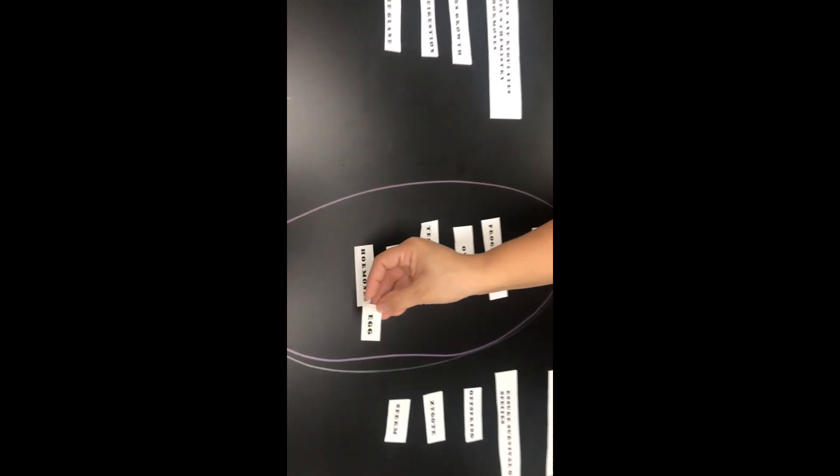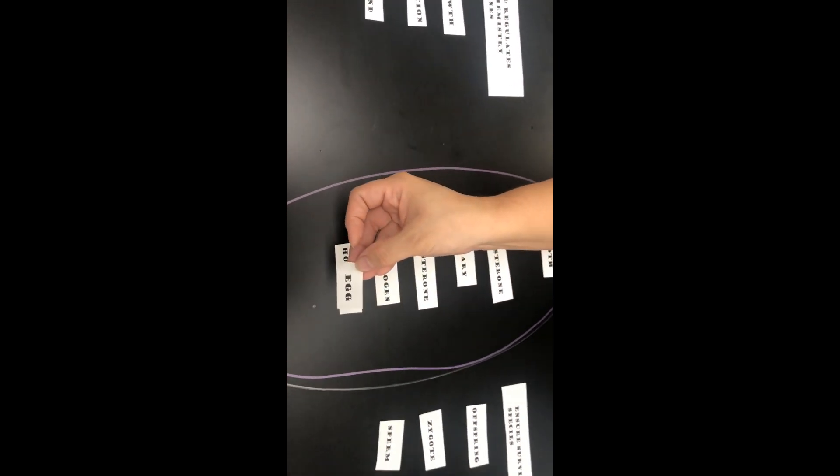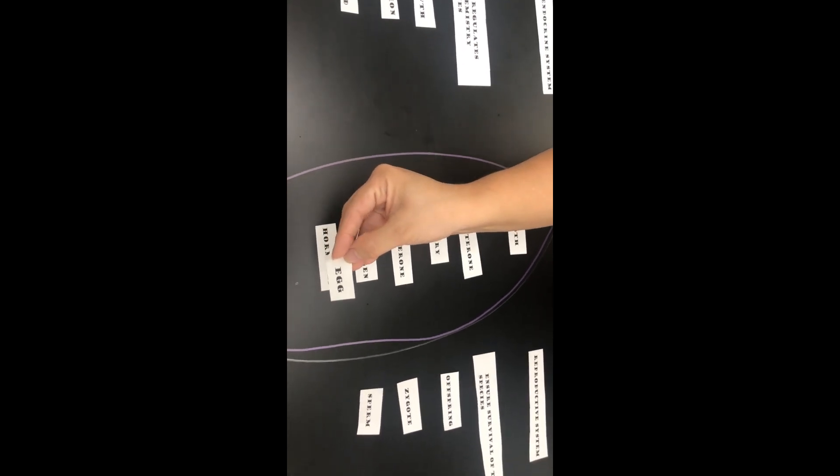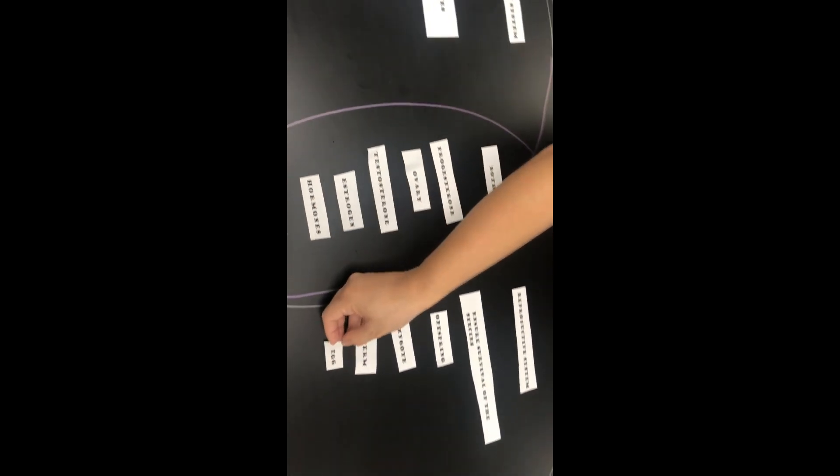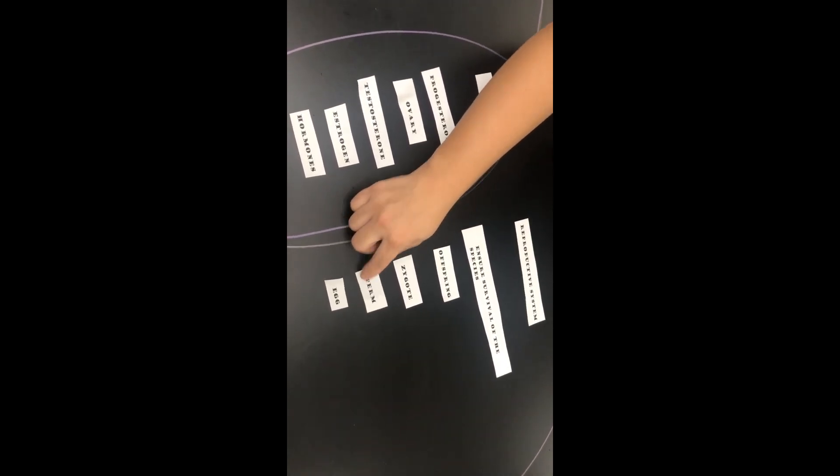Eggs are found in the ovaries of a female. This is the female gamete or female sex cell. So this is the male sex cell and this is the female sex cell.